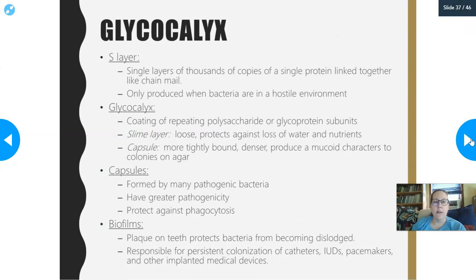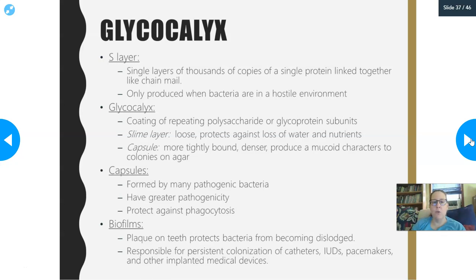Let's talk about the glycocalyx. First, there's the S-layer — a single layer of thousands of copies of a single protein linked together like chain mail. It's protective — like a protective armor on the outermost surface. The S-layer is only produced when bacteria are in a hostile environment and their survival is threatened; they will put that layer up to protect themselves from dehydrating or rupturing.